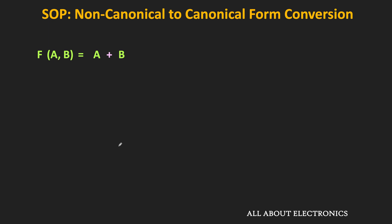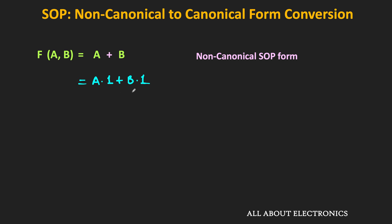For simplicity, let us take a boolean expression with two variables. If you look at this expression in the SOP form, it is in the non-canonical form. We can write this expression as A·1 plus B·1. In the first product term, variable B is missing, while in the second product term, variable A is missing. So first, let us add these missing variables to these two terms.